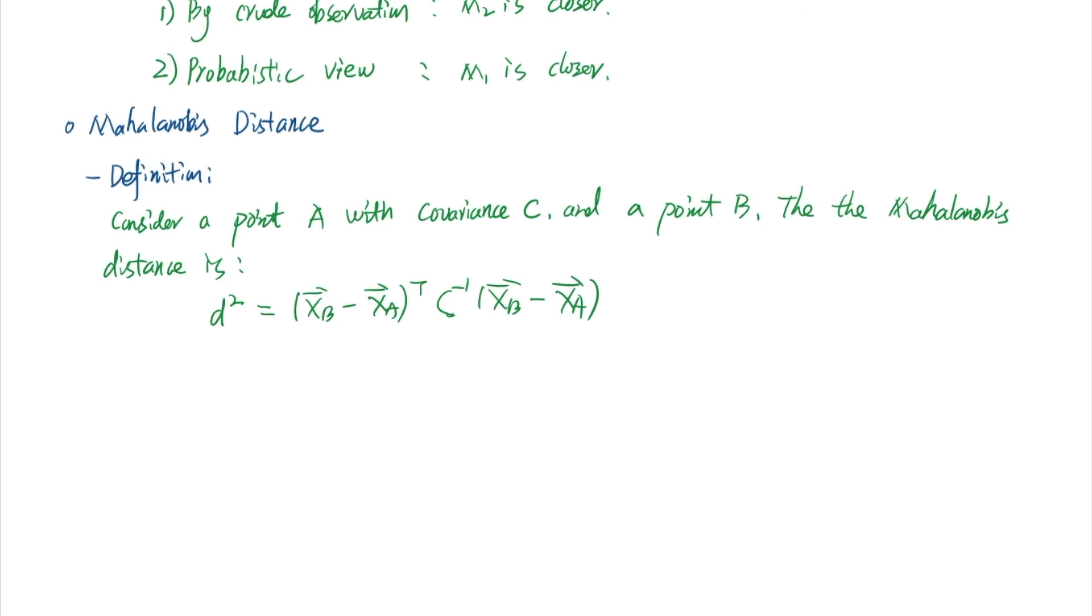Similarly, XA is also an n by 1 vector. Therefore, the transpose of their subtraction is just a 1 by n vector. The dimension of C inverse is also n by n. And again, XB minus XA is an n by 1 vector. Therefore, the result of the product is just a scalar. This is expected because Mahalanobis distance is just a scalar distance.